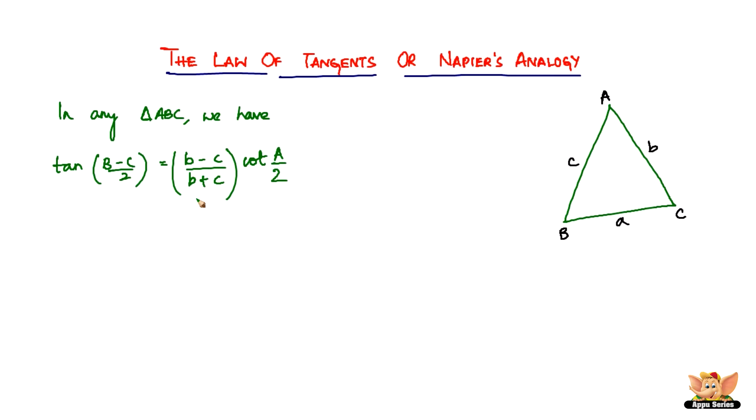Another law is nothing but it's just going to be cyclic. That's all. tan((A-B)/2) which is going to be equal to (a-b)/(a+b) into cotangent of C by 2.